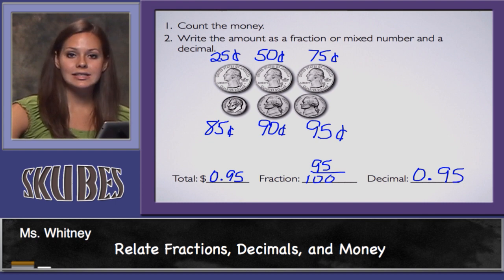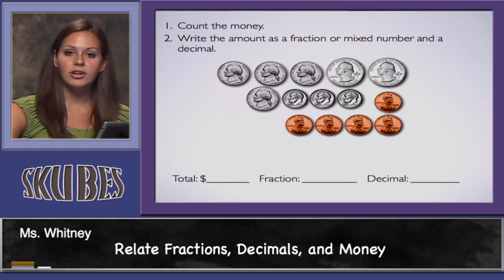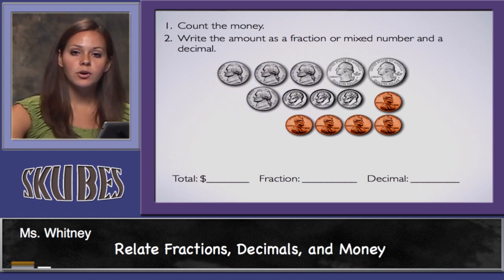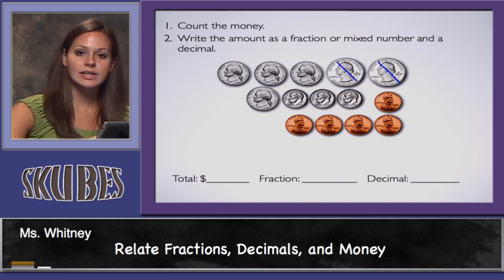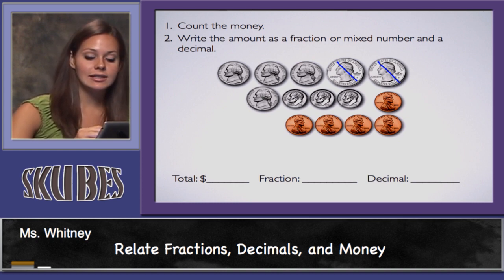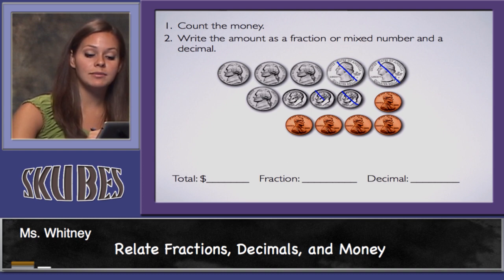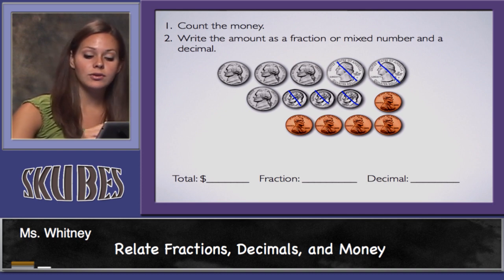To show 95 hundredths, take a look at this next example. First we're going to count the money. I have two quarters which is equal to 50 cents. Next I'm going to count my dimes — each dime is 10 cents. So I have 50 cents plus a dime: 60 cents, another dime: 70 cents, another dime: 80 cents.